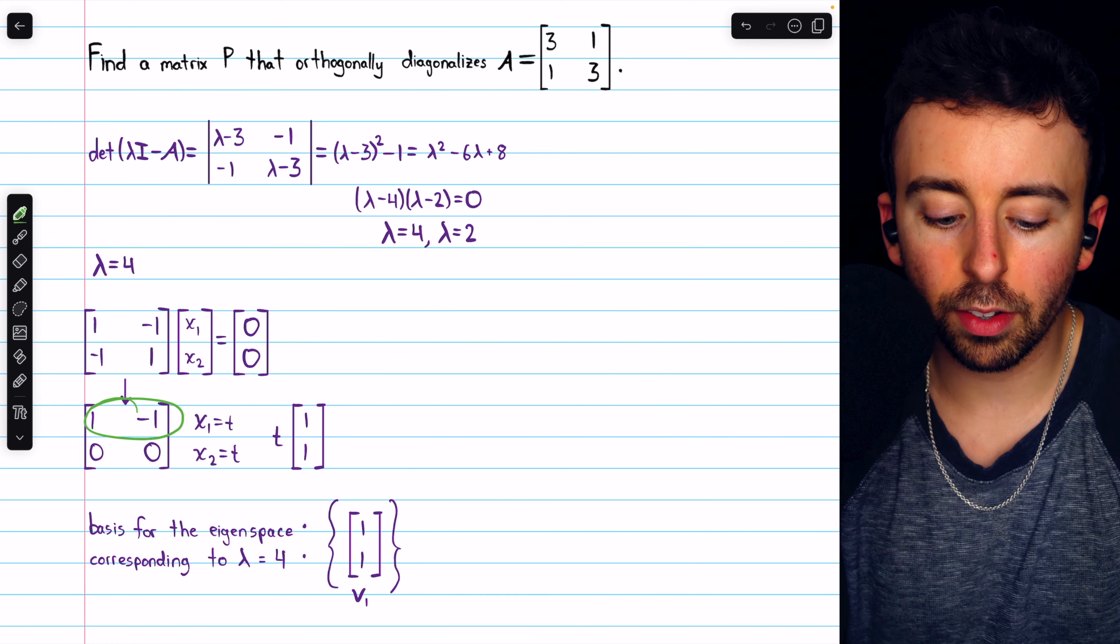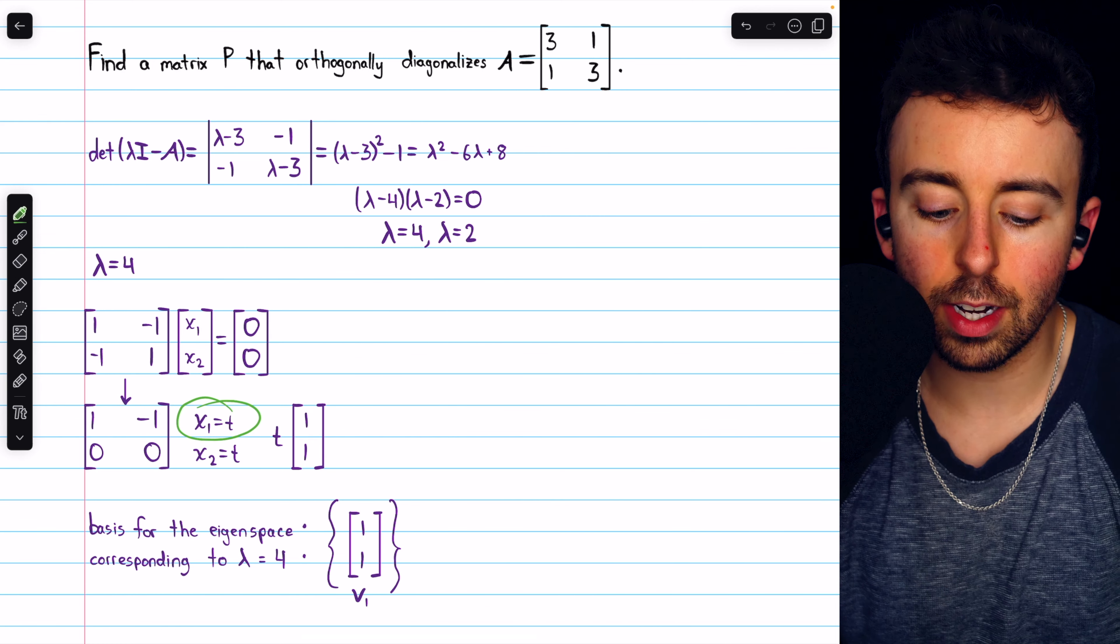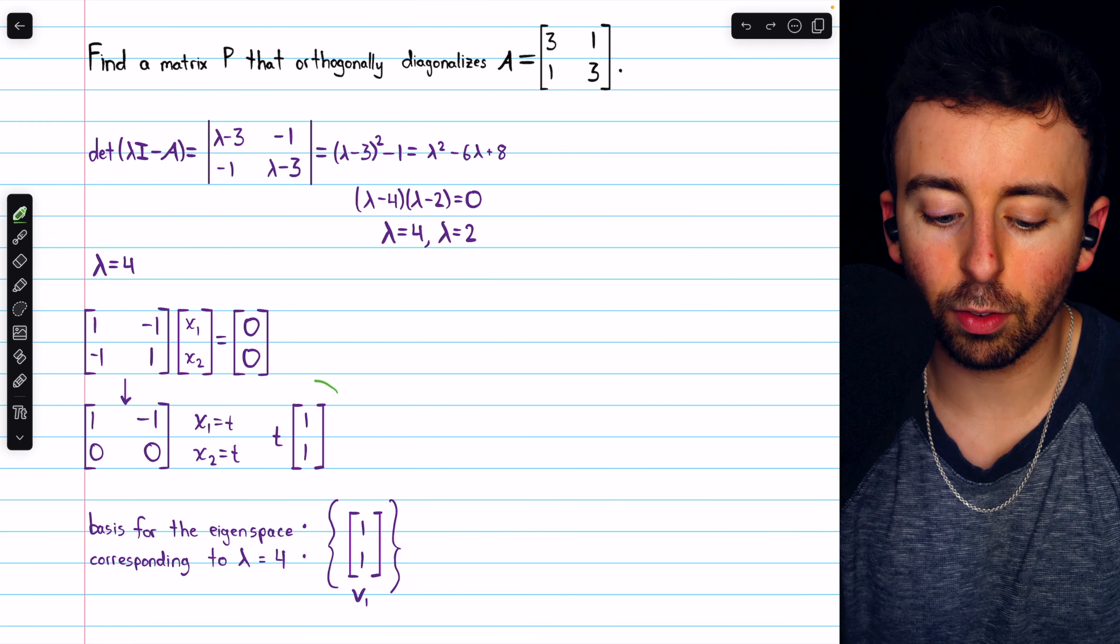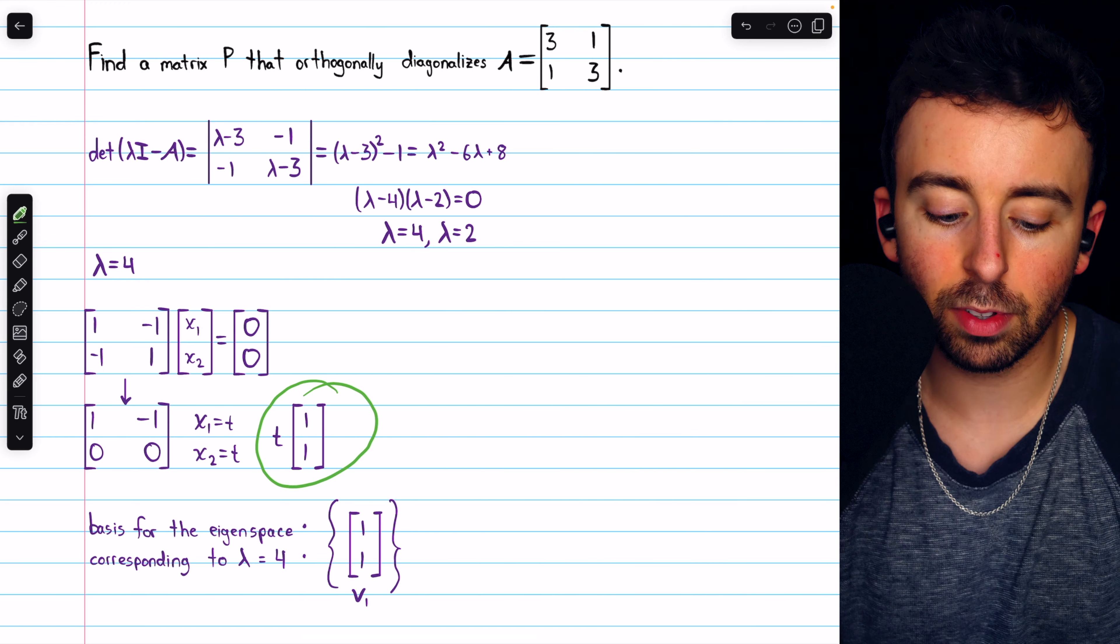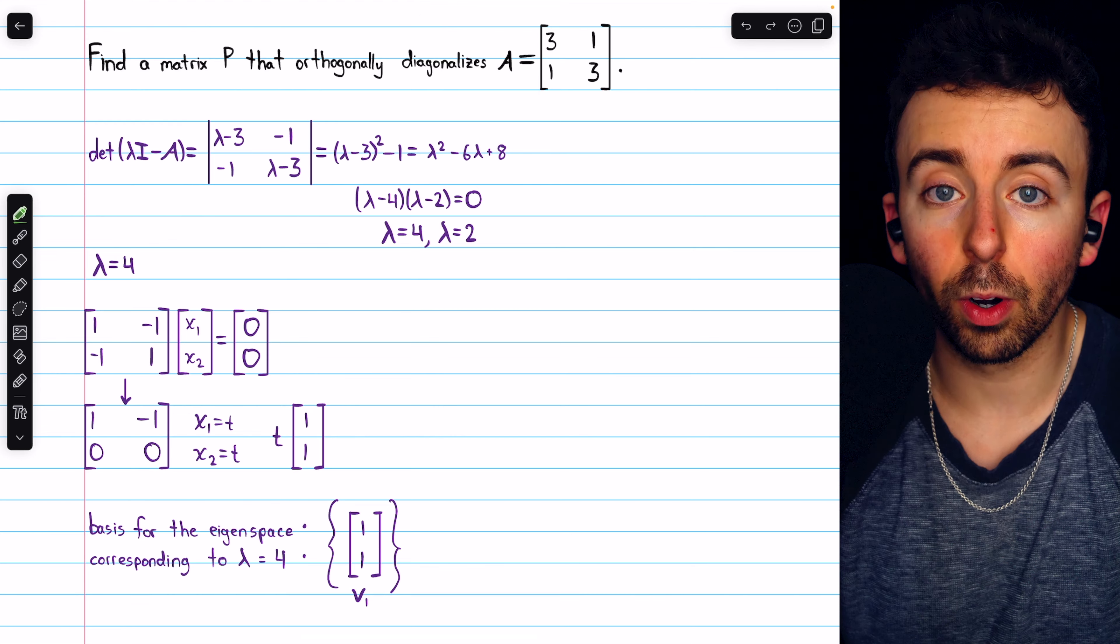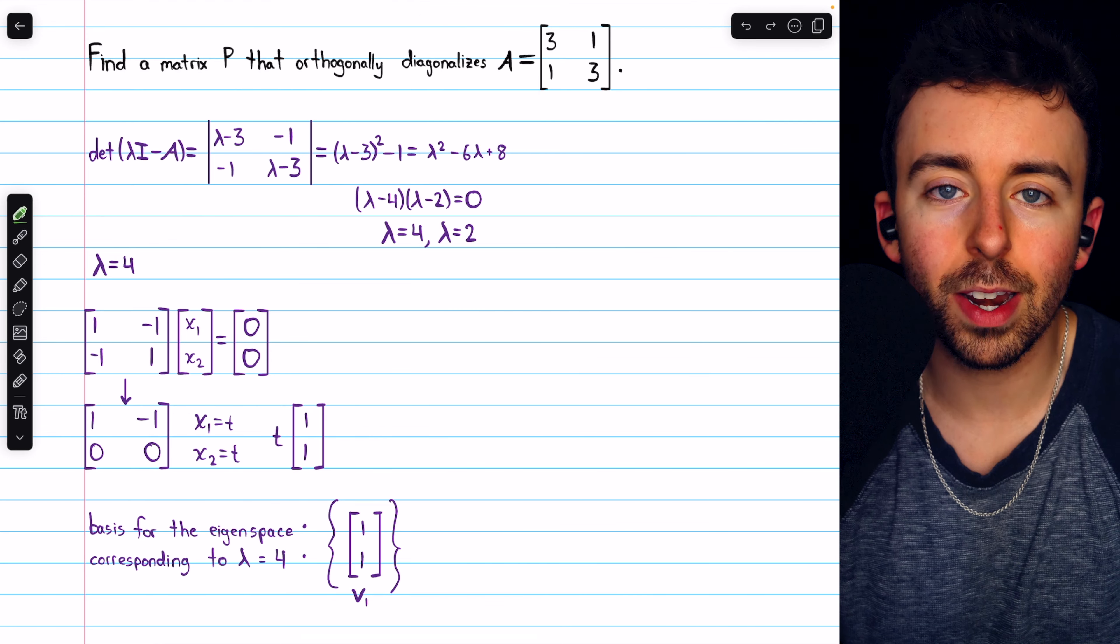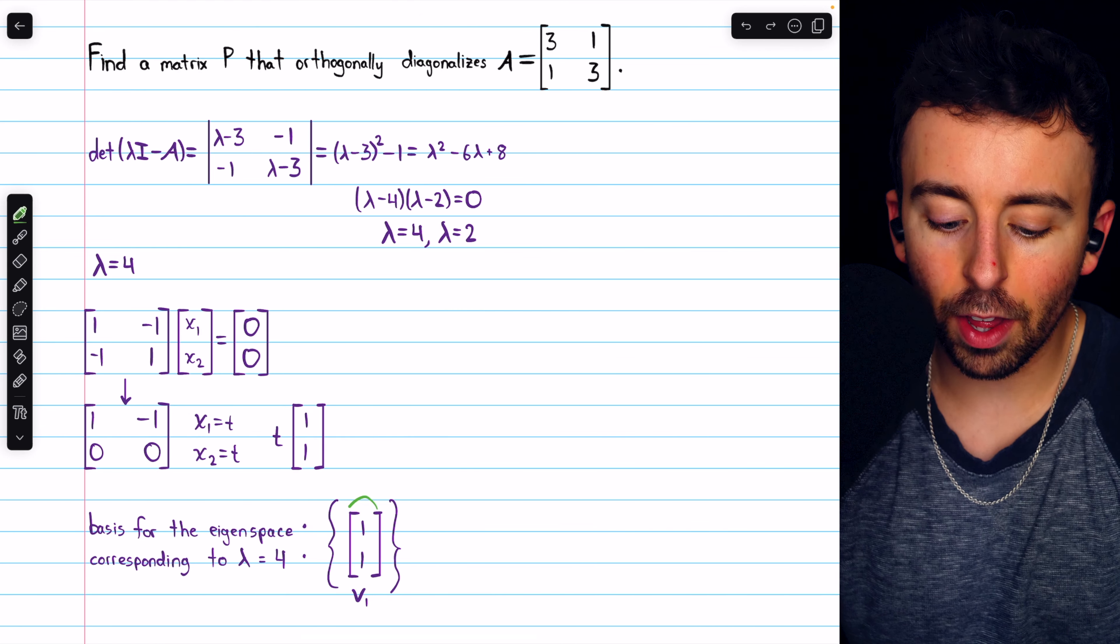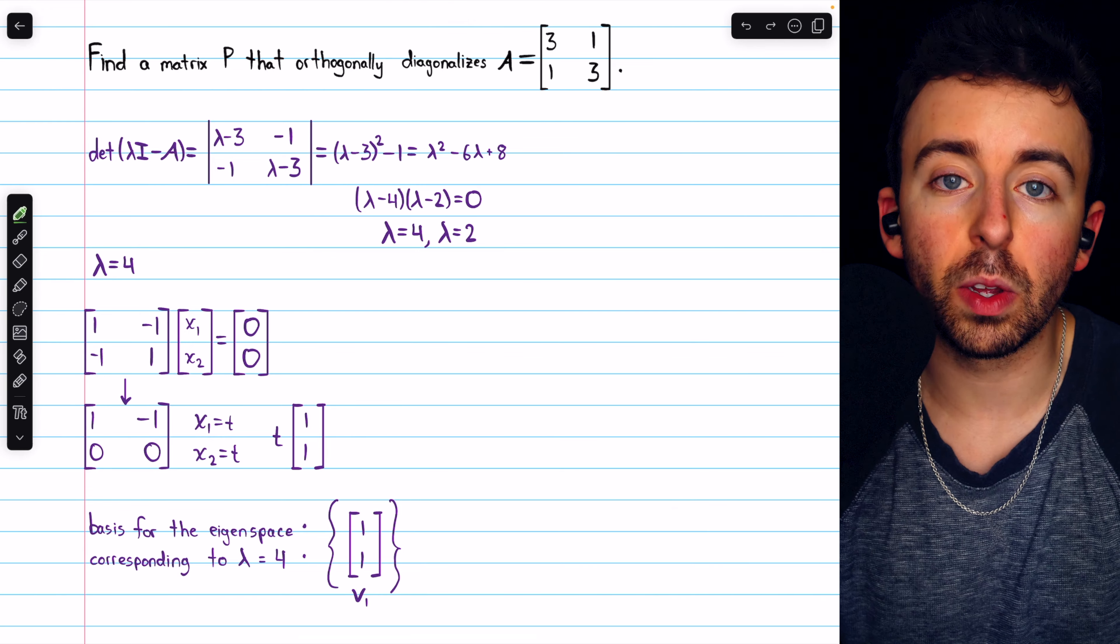From row 1, we also have that x1 equals t. So the solutions can be described like this: t times the vector [1, 1]. And that vector [1, 1] forms a basis for the corresponding eigenspace. Let's call that basis eigenvector v1.